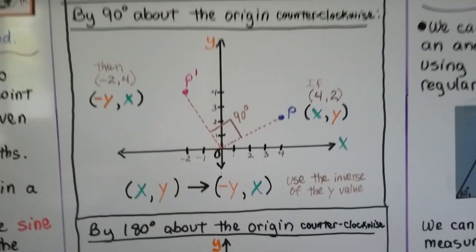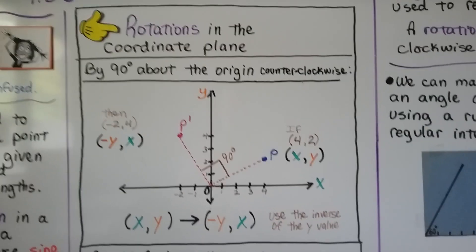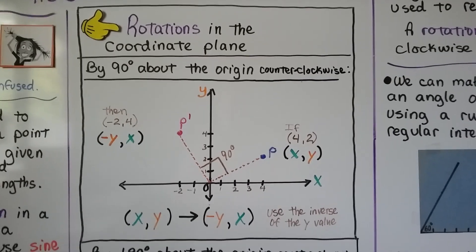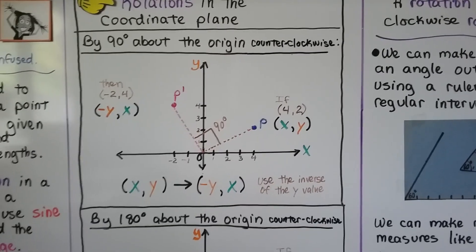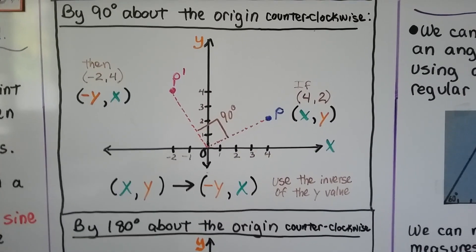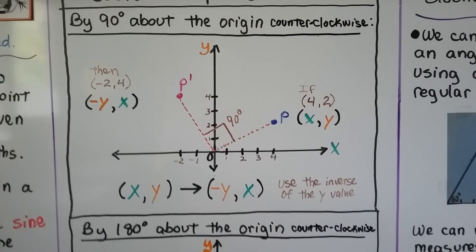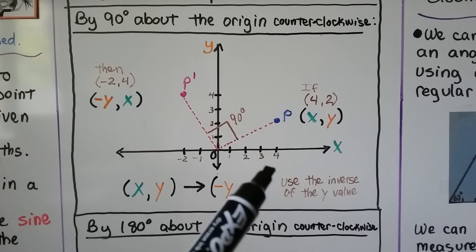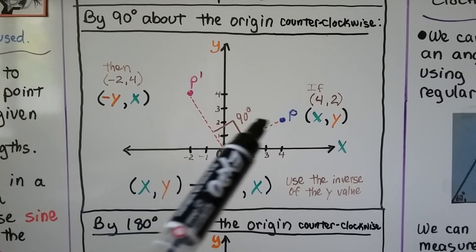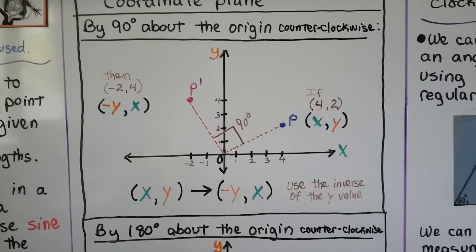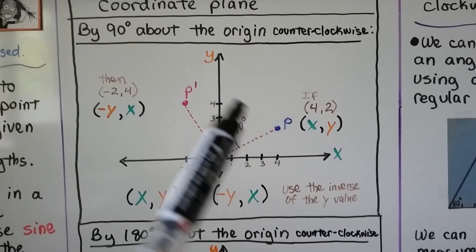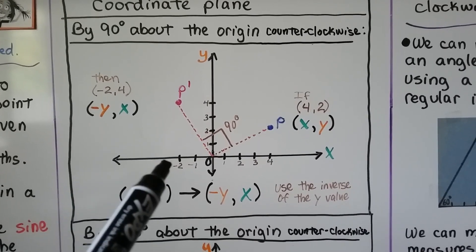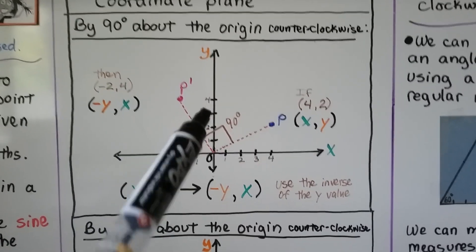So for rotations in the coordinate plane by 90 degrees about the origin counterclockwise, take a look at this diagram. We have this blue point p, and its coordinates x and y are at a 4 for x and a 2 for y. If we rotate this by 90 degrees about the origin counterclockwise, we're going to be at p prime over here, and our coordinates are going to be a negative 2, 4.